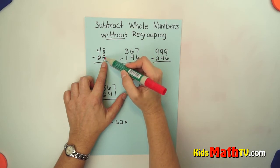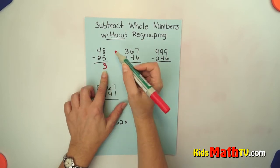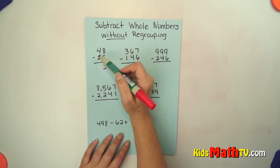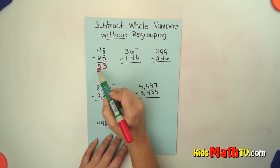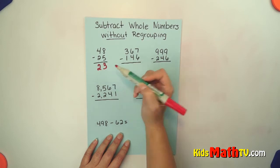We start in the ones. 8 minus 5. If we take 5 away from 8 there are 3 left over. And then 4 minus 2 is 2. So our answer is 23. 48 minus 25 is 23.